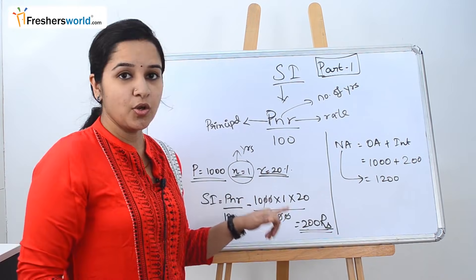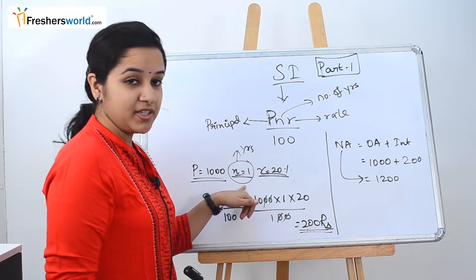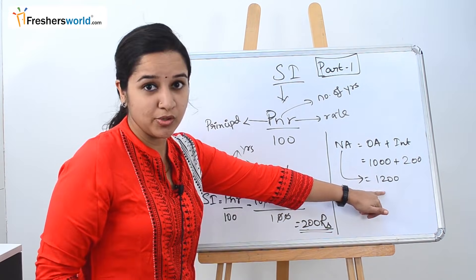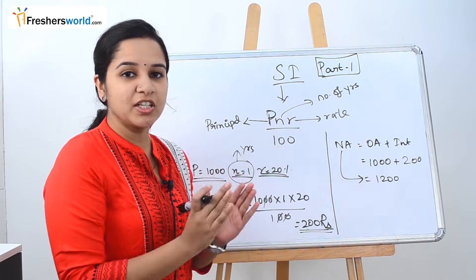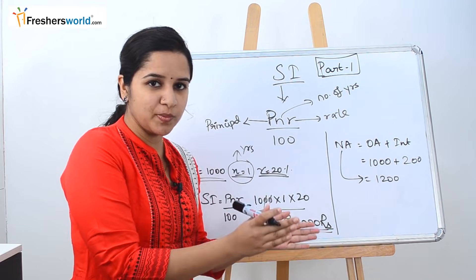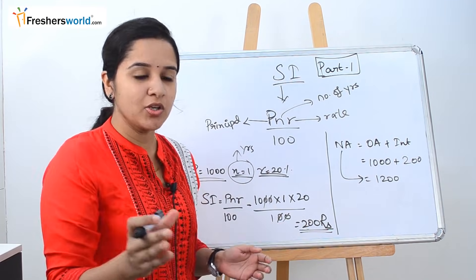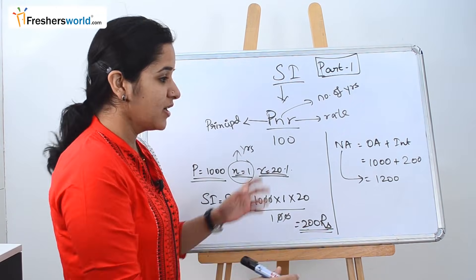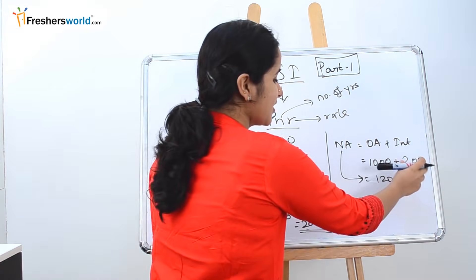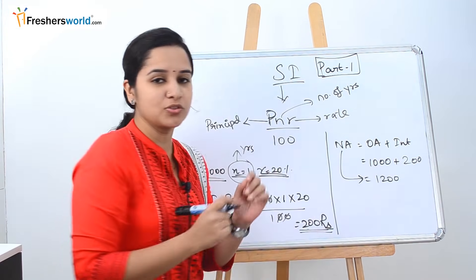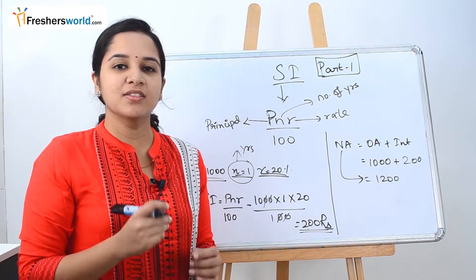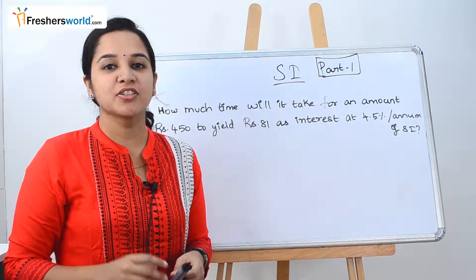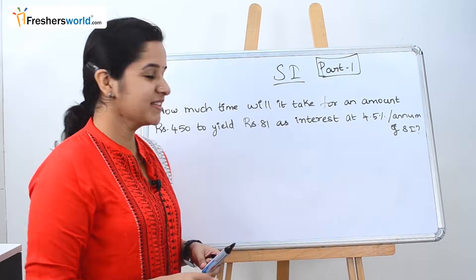So at the end of one year, you will have an amount of 1200 rupees. You initially put 1000 rupees in the bank, and at the end of one year you earn interest of 200 rupees, so together 1000 plus 200 equals 1200.